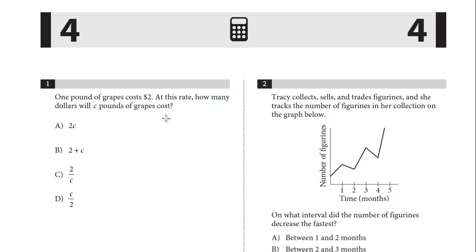One pound of grapes costs $2. At this rate, how many dollars will C pounds of grapes cost? So one pound of grapes is $2, and to figure out how many C pounds of grapes, it would just be 2 times C. The answer is A.